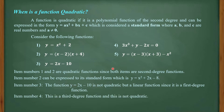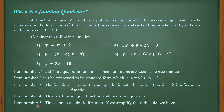For item number 4, this is a third-degree function and is not quadratic since the highest exponent of variable x is 3 — it is considered a cubic function. For item number 5, this is not a quadratic function either. If we simplify the right side, we will have y = x² − 9 − x², and the x² terms cancel out.